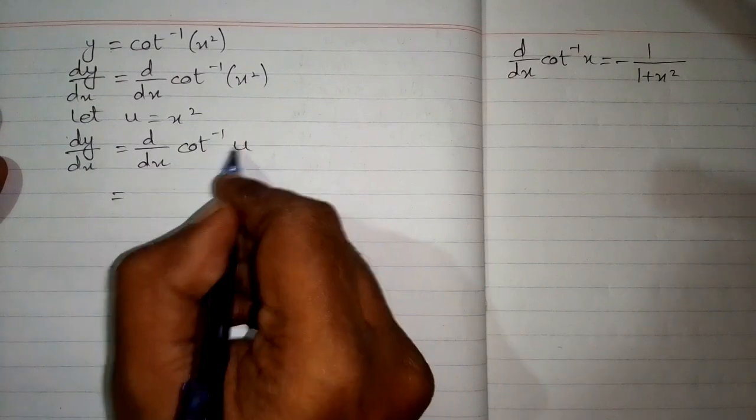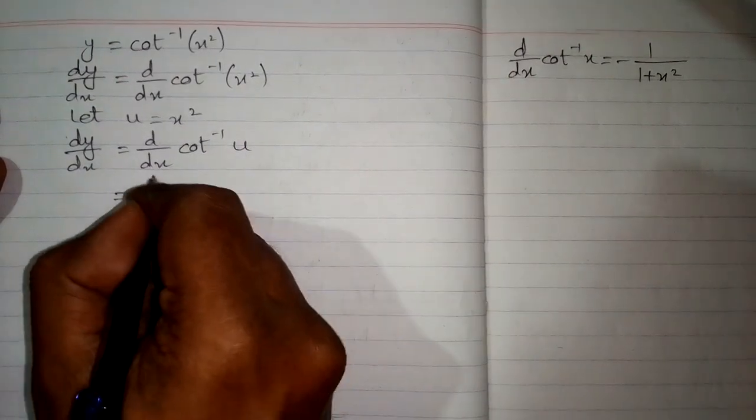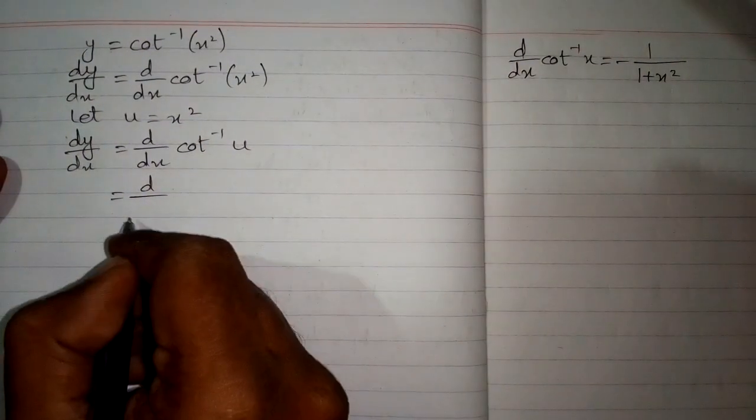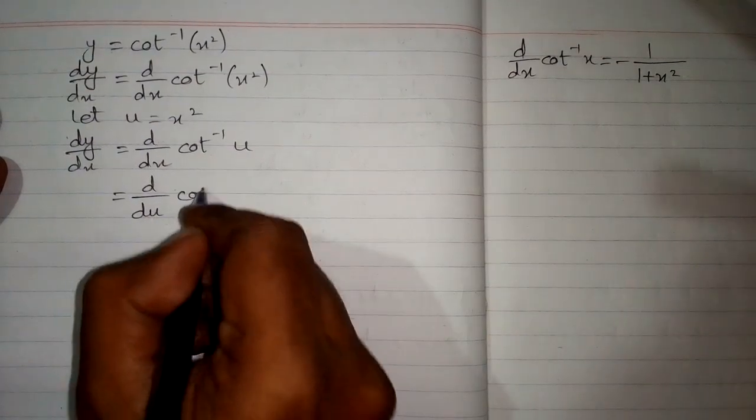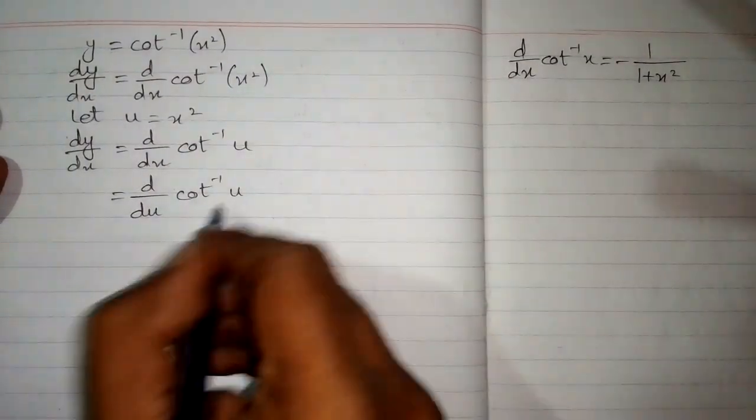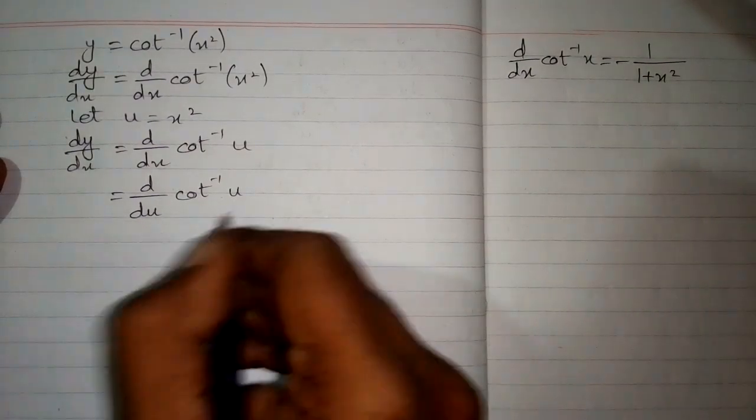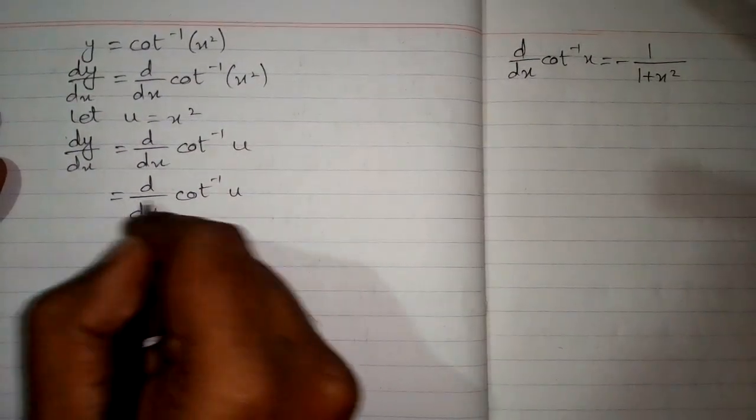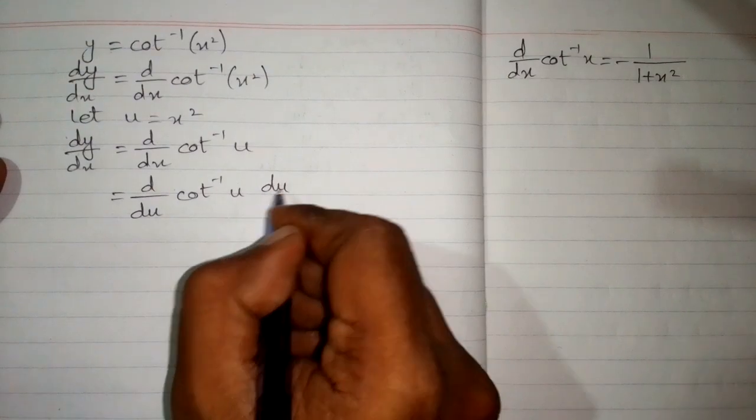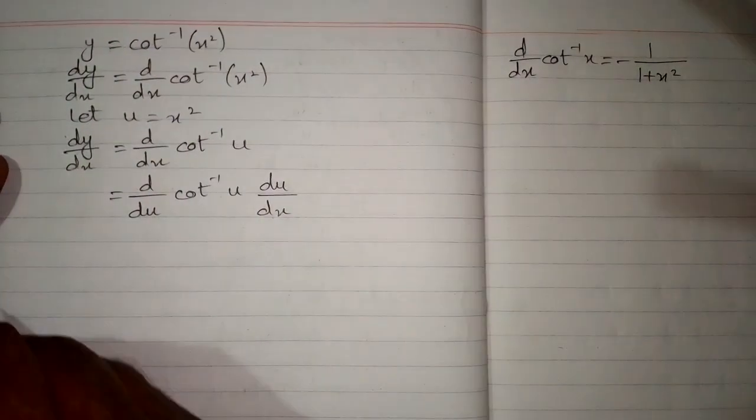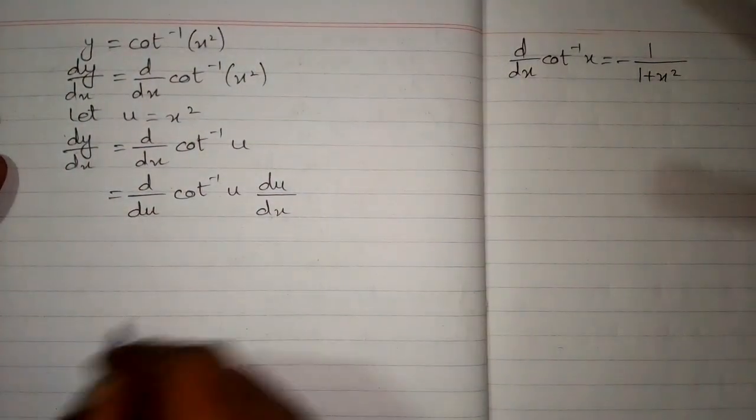Again, we have different variables so we will write du over here in order to apply this formula, so that this variable and this variable are the same. In order to balance this, we will multiply by du by dx. This is called the chain rule of differentiation.